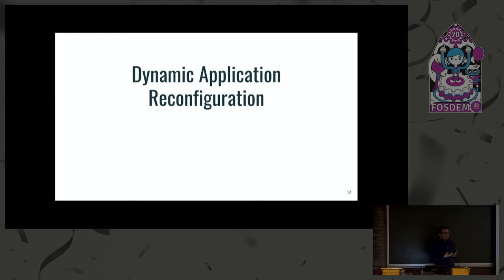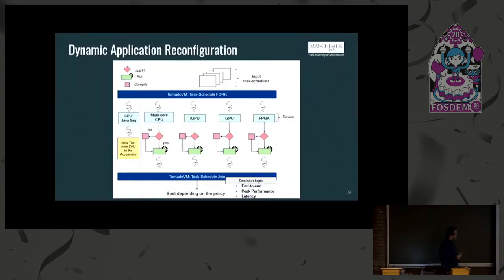Let's have a look now at what is dynamic application reconfiguration, which I think is a very nice feature to have in systems. Dynamic application reconfiguration is essentially live task migration, so the tasks, the methods, can be dynamically migrated from one device to the other. And this is really cool. Let's have a look at how our framework is built in order to support this functionality. At the top we have the task schedules, which are the groups of methods to be offloaded on the hardware to be accelerated. Then Tornado forks one thread per device, so for example for the multi-core CPU, the integrated GPU, the external GPU, or the FPGA, including a thread for the Hotspot which will JIT compile the code in the OpenJDK.